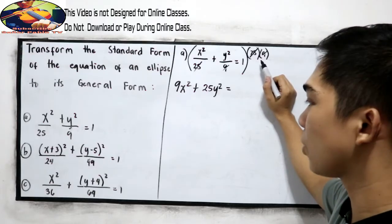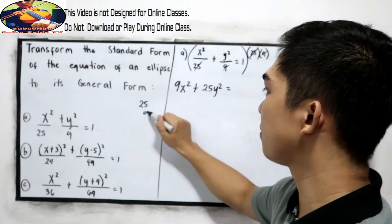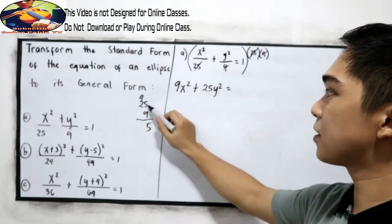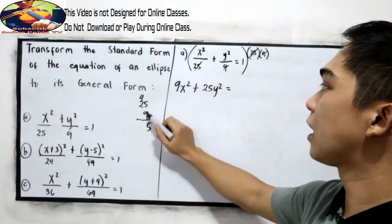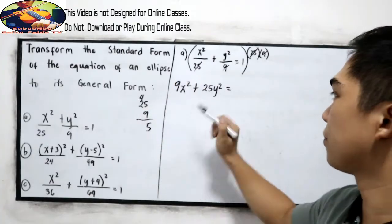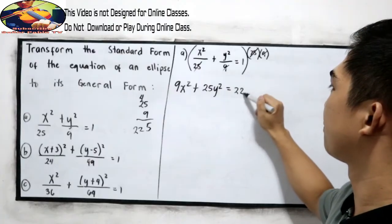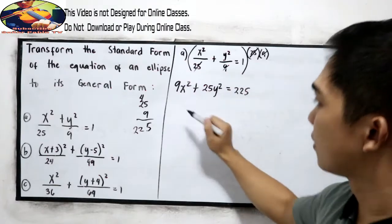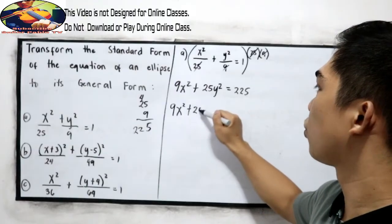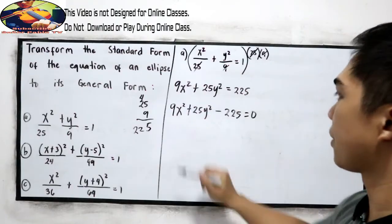So the remaining is 25y squared is equal to 25 times 9. Okay, let's multiply 25 times 9. 25 times 9, that is 5, carry 4. 9 times 5 is 45. 9 times 2, 18 plus 4, that's 225. So final answer, 9x squared plus 25y squared minus 225 is equal to 0.